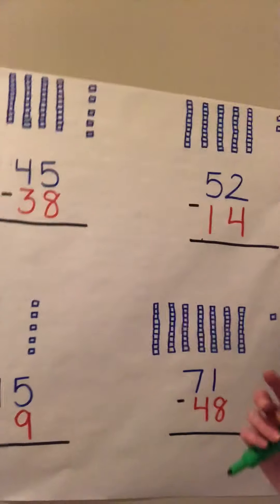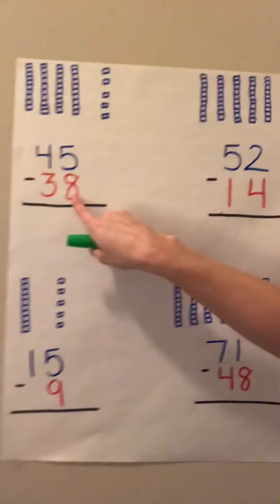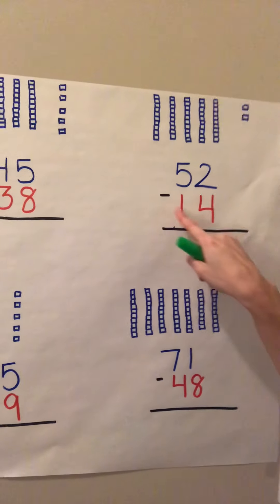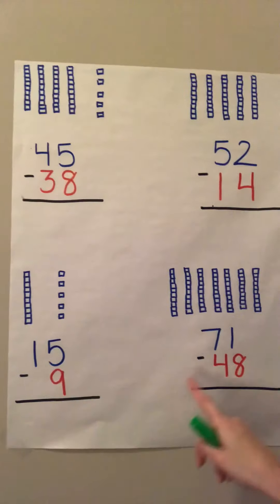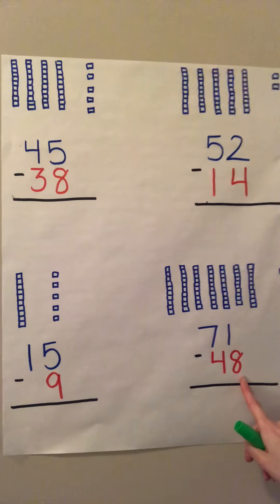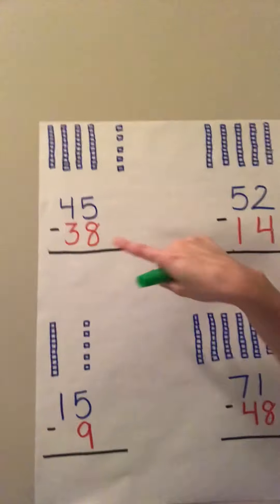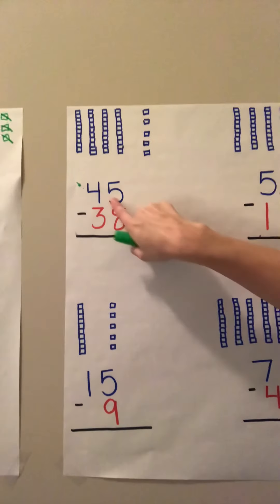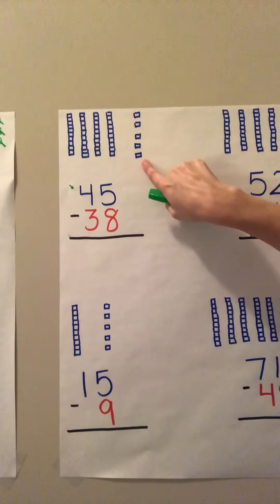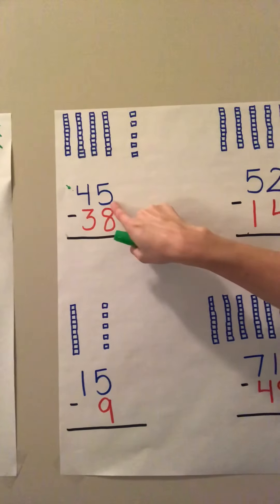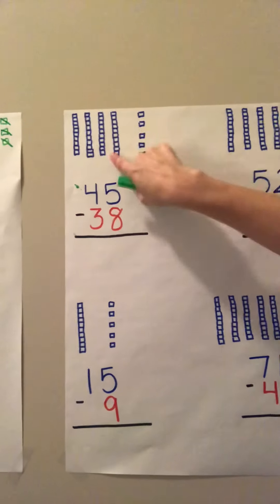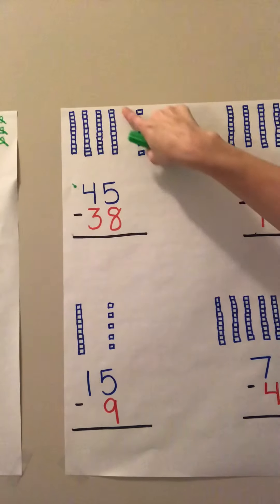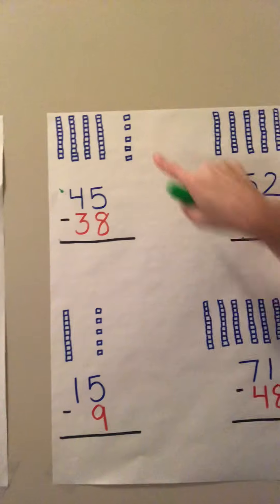I want you to try the same thing using your base ten blocks. So you're going to try forty-five minus thirty-eight, fifty-two minus fourteen, fifteen minus nine, and seventy-one minus forty-one or forty-eight. The top number is what is represented, so forty-five means four tens and five ones. And before you subtract, if five minus eight doesn't work, you need to remember to borrow — take your group of ten and move it to the side.